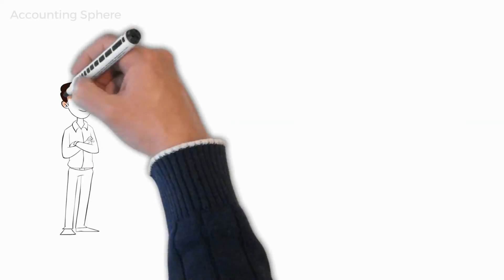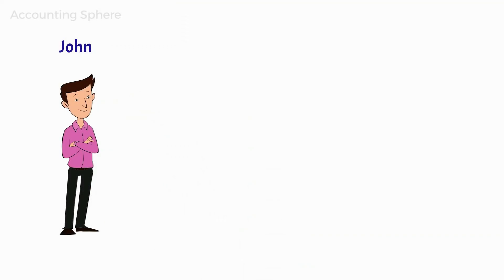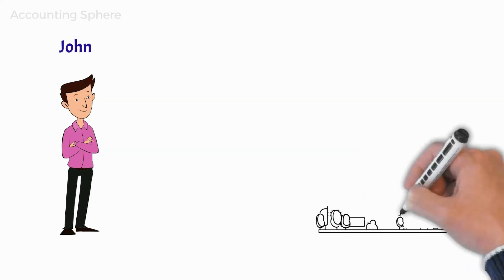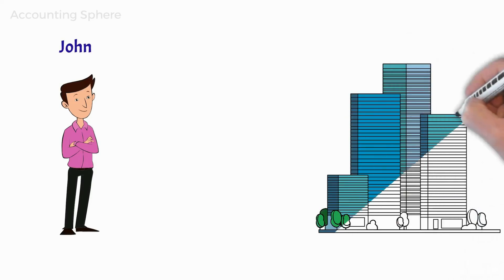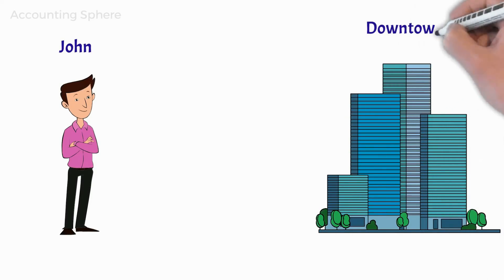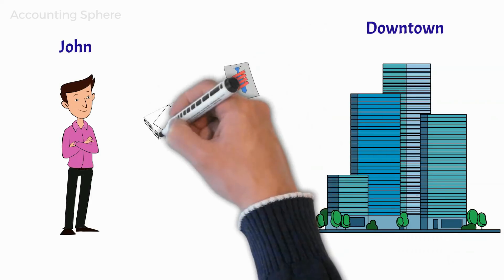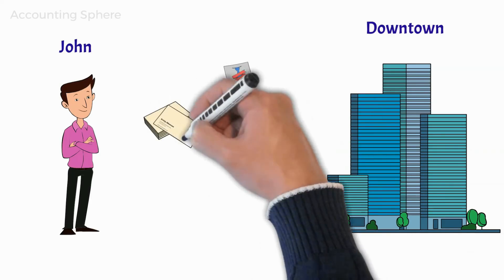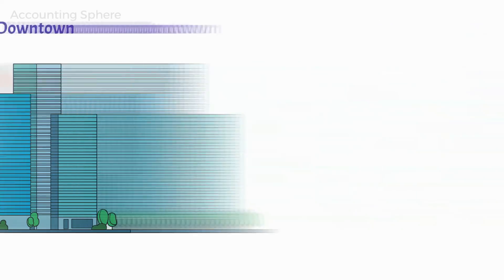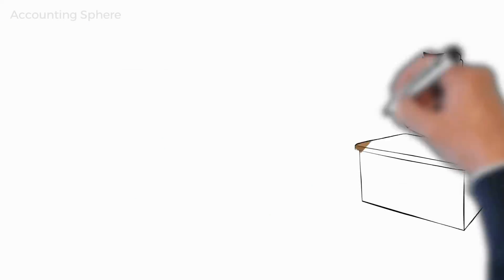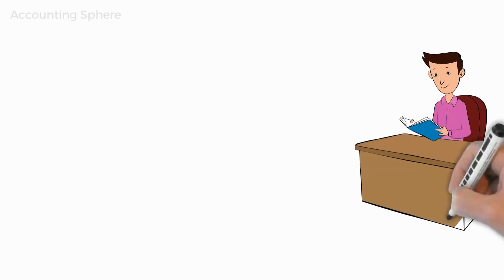John, a young entrepreneur, spotted a business opportunity in the city center downtown — a place where many shops and businesses compete using marketing techniques, where they have a need for brochures, leaflets, flyers, and handouts. As he's a self-learner, he decided to buy accounting books to educate himself.